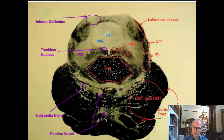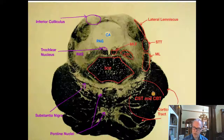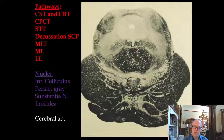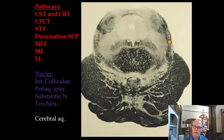The corticopontocerebellar tract is out in the periphery; the corticospinal and corticobulbar are in the center. We also have the medial lemniscus and the spinothalamic tract, which move together because they are traveling to the same nucleus of the thalamus — the VPL. The medial lemniscus is here, the spinothalamic tract is out here, and adjacent to it is the lateral lemniscus.